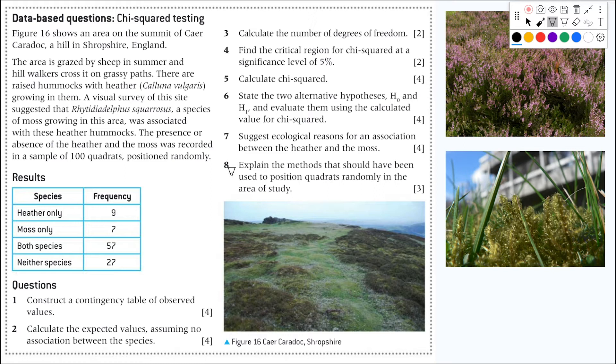This is a question about chi-square testing used in ecology. The question says figure 16 shows an area on the summit of Kair Karadok, a hill on Shropshire, England. Probably butchered all those names. The area is grazed by sheep in the summer and hill walkers cross it on grassy paths. There are raised hammocks with heather, Colonia vulgaris, this plant here, growing in them.